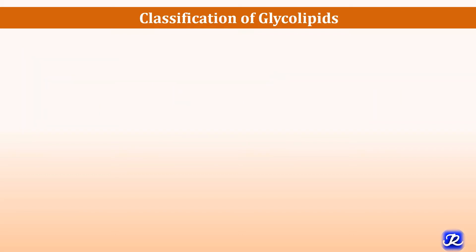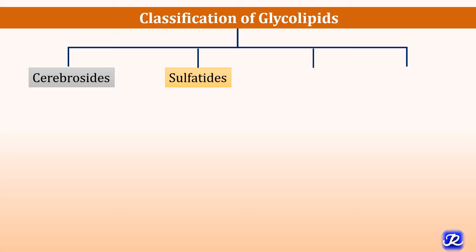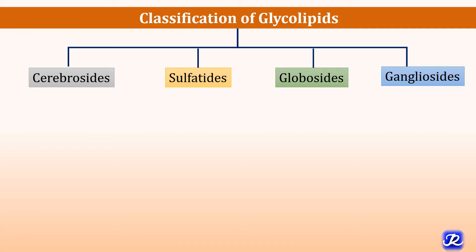Let's see the classification of glycolipids. Glycolipids are classified into four major classes. The first one is cerebrosides, second is sulfatides, third is globosides, and the fourth is gangliosides.